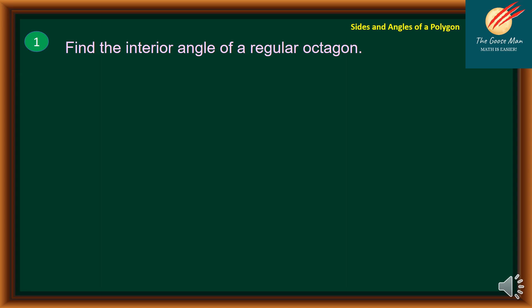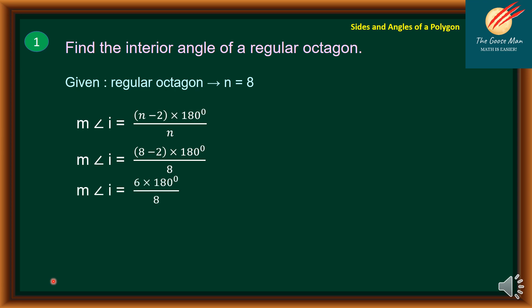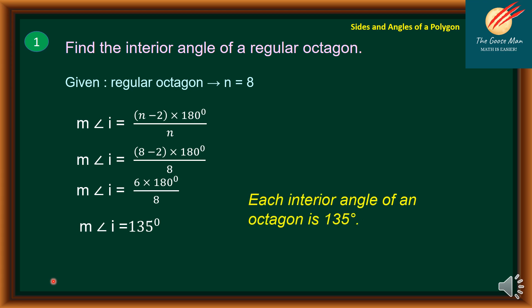Application number one: find the interior angle of a regular octagon. A regular octagon has N equal to 8. We use the formula (N − 2) × 180 divided by N. Substituting: (8 − 2) × 180 divided by 8, which gives 6 × 180 divided by 8. The measure of each interior angle is equal to 135 degrees. Therefore, each interior angle of an octagon is 135 degrees.